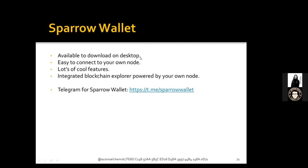In conclusion, Sparrow Wallet is available on desktop — Linux, Mac, and Windows. It really is easy to connect to your own node. If you've never done this before it can seem overwhelming at first, but it's pretty straightforward once you actually do it. Sparrow has a ton of awesome features: single-sig and multi-sig, hardware wallet integration, watch-only wallets, and its own block explorer. It's really well designed. Jump into the Telegram group for community support if you have questions.